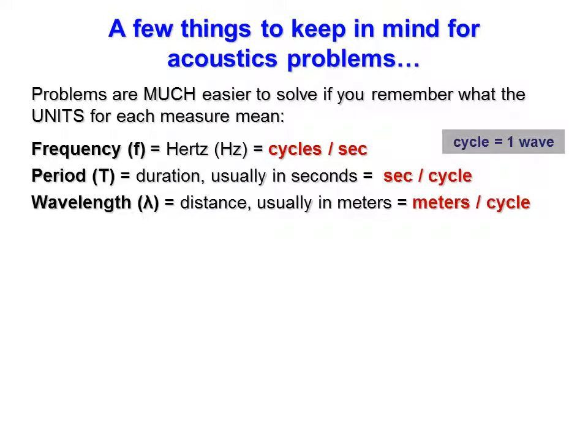The next descriptive metric is wavelength, denoted by lambda. Wavelength is a distance metric, usually given in meters, but possibly inches or centimeters. You can think of its units as distance per cycle — so meters per cycle. This is basically asking how long is one wave, which is literally what wavelength means. Writing it as meters per cycle helps you keep in mind the relationships between these variables.